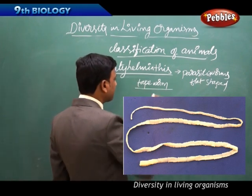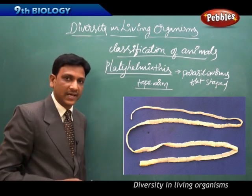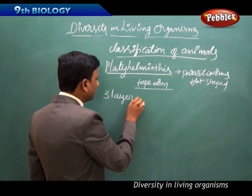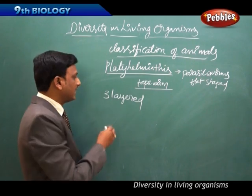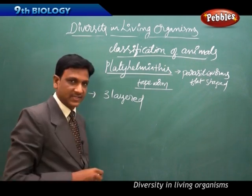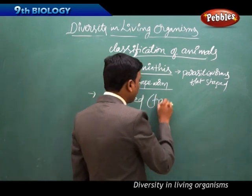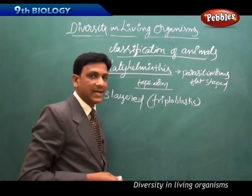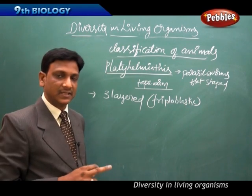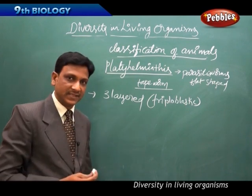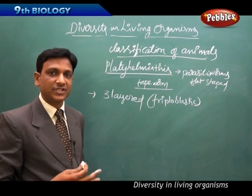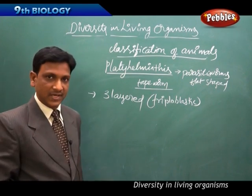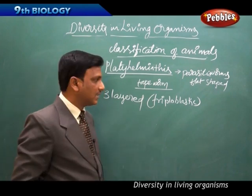Platyhelminthes have three layers of cells, so they are called triploblastic. In contrast, Coelenterata (like hydra) have two layers of cells and are diploblastic. Each cell layer in triploblastic organisms can differentiate into different tissues and form different organs.